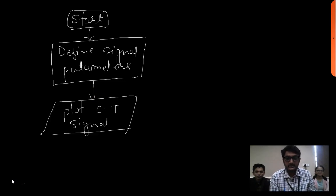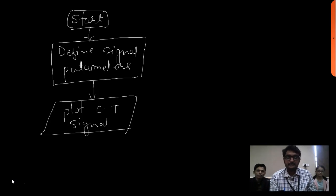Let's see the flow of our program. First, we are going to define signal parameters, then plot the continuous time signal. In sampling we have three conditions: one where the sampling frequency equals twice the signal frequency; second where the sampling frequency is greater than twice the signal frequency; and third where the sampling frequency is less than twice the signal frequency.